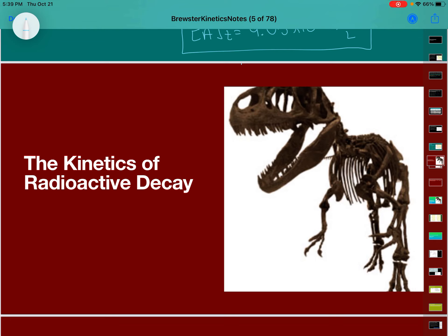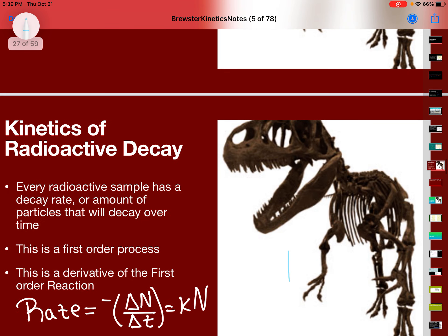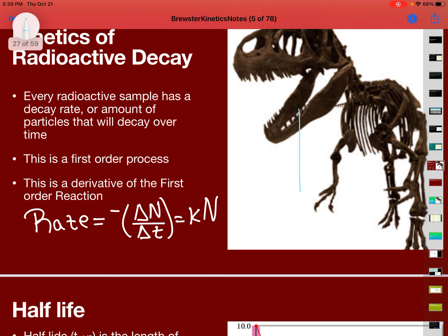The second part of our notes included the kinetics of radioactive decay, and we had this discussion about that every radioactive sample has a decay rate, or the amount that the particles will decay over time, that this is a first-order process, and that it's a derivative of the first-order reaction. And I gave you that equation to go with it.